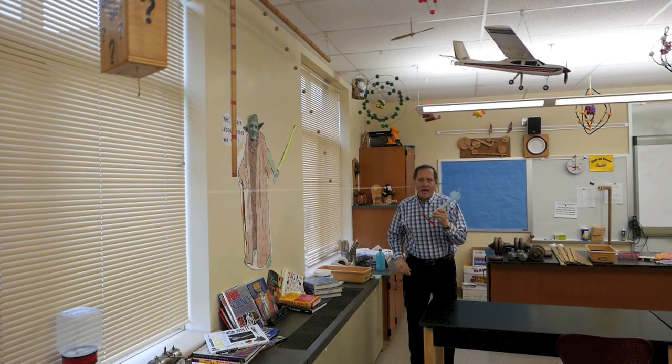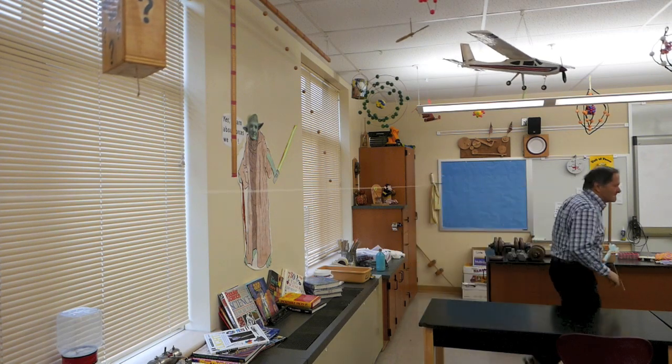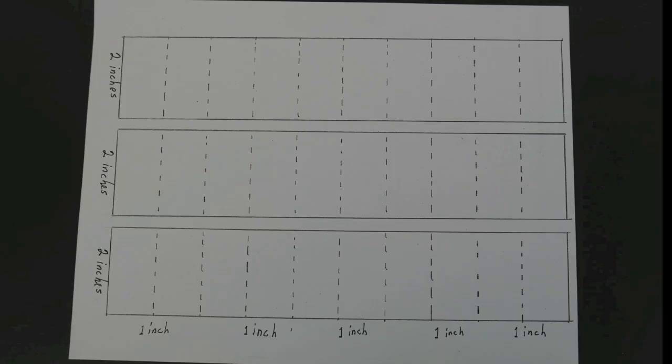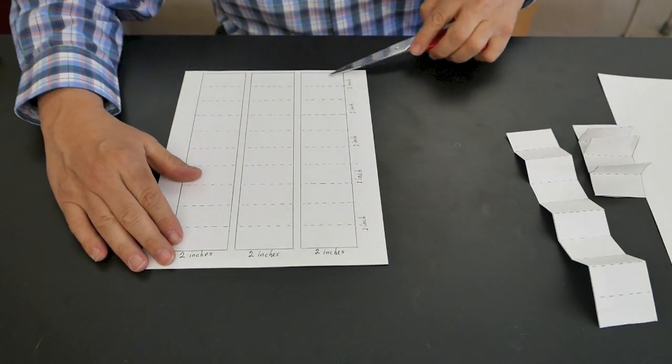Now let's take a look and see how to build these. Here's the pattern for the body, it's made on heavy stock paper. And here's the pattern for the fins, this is a set of three. Now let's start by cutting out one of those sections for the fins.